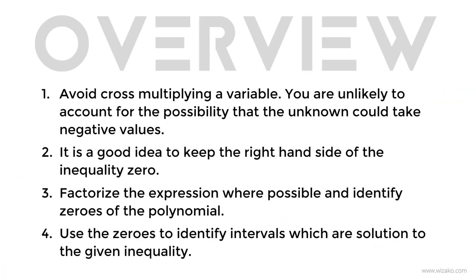Quick recap of the method: Most importantly, do not cross multiply — avoid cross multiplying when you have an x term in the denominator. Take everything to one side so you're always evaluating for something being positive or negative. Then factorize the expressions, identify the zeros of the polynomial, plot the zeros on a number line, pick the ranges of values to substitute, find friendly numbers in each range, plug them in at any step from the original inequality to the factorized form, and determine whether the inequality holds good in each interval.